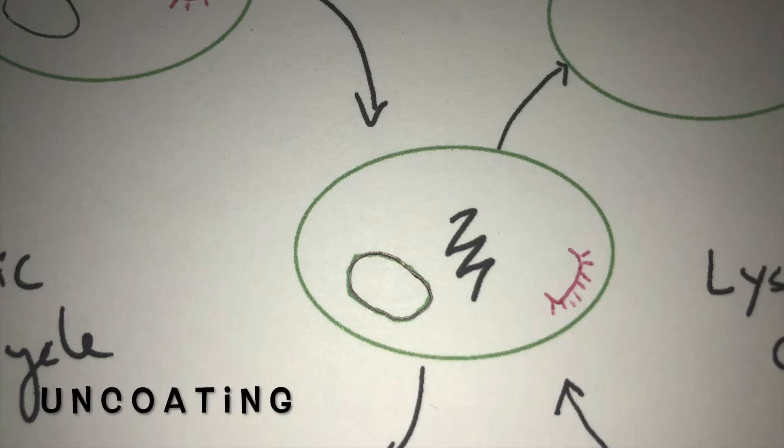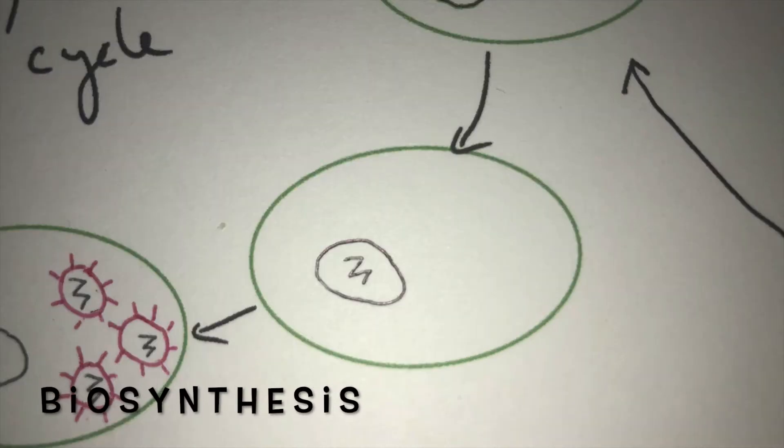The third stage is encoding, where the genetic information of the virus is released into the host cell. The fourth stage is biosynthesis, where the genetic information enters the host cell's nucleus, takes control, and creates copies of itself.